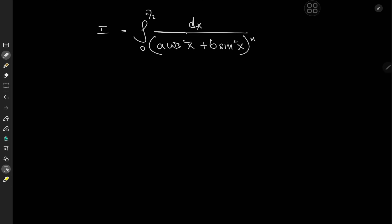Good morning folks. The subject of discussion today is Hardy's integral. This integral is due to the legendary G.H. Hardy himself. We are interested in the integral from 0 to pi over 2 of dx over (a cosine squared x plus b sine squared x) to the n, where a and b are positive real numbers and n is a positive integer.